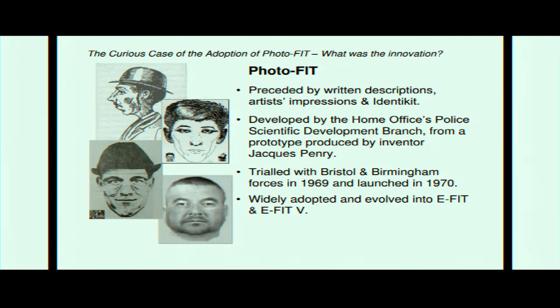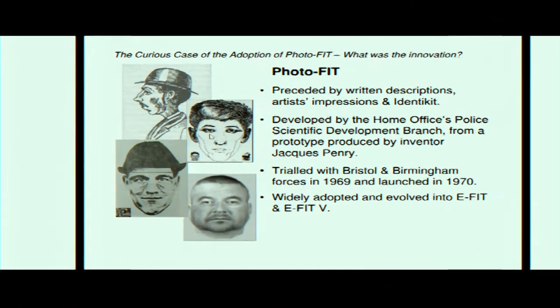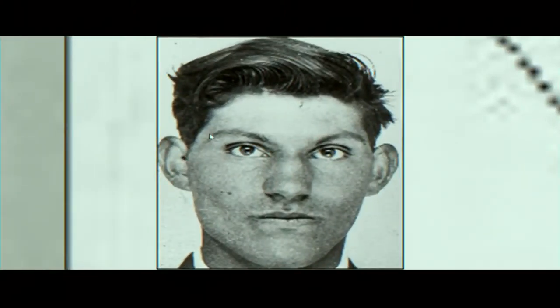What you see here is what's called an identikit — a system developed in America in the 1940s. It consists of a series of transparencies with line drawings of features which you build up to make a composite face. Identikit was first used in Britain in 1961 to identify the murderer of Elsie May Batten, who was stabbed to death in the antique shop where she worked in Charing Cross. It was circulated internally within police forces and also externally in newspapers, with the result that a police officer on the beat recognised Edwin Bush, who was convicted for it. That identikit is actually quite good — unusually good.